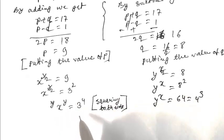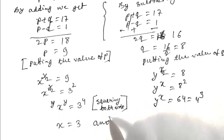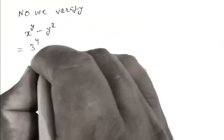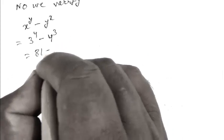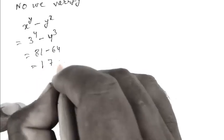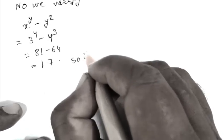Comparing these two equations we get x equal to 3 and y equal to 4. Now we verify: x to the power y minus y to the power x equals 3 to the power 4 minus 4 to the power 3, that is 81 minus 64, which equals 17. So it is verified.